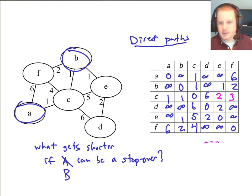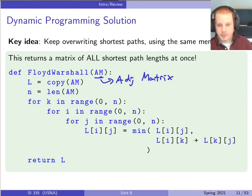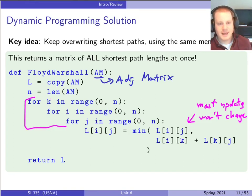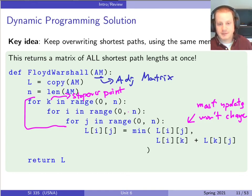We would proceed like that for the rest of the graph and the rest of the stopover points. Like many dynamic programming algorithms, it seems super tedious and slow when done by hand — most of these updates don't happen. But what are we really doing? We're going through the entries of the graph, and K is the stopover point we're considering. We can analyze the runtime extremely easily, because we have three nested for loops that are all n in size. So the total is just Θ(n³).